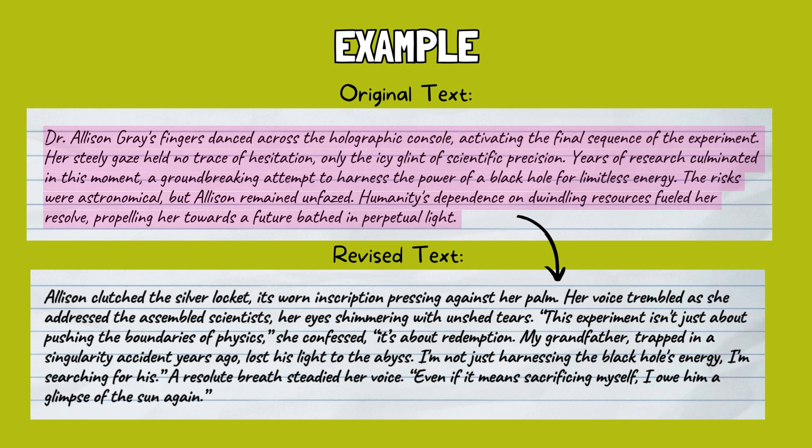During the Character Check, the author recognizes the need to make Dr. Alison Gray a more well-rounded and relatable character. The revised version reveals Alison's vulnerability and the deeply personal stakes she has in the experiment. The locket and the family history introduce emotional depth and a relatable motivation. Readers can now understand and empathize with Alison's decision, creating a more engaging narrative connection.